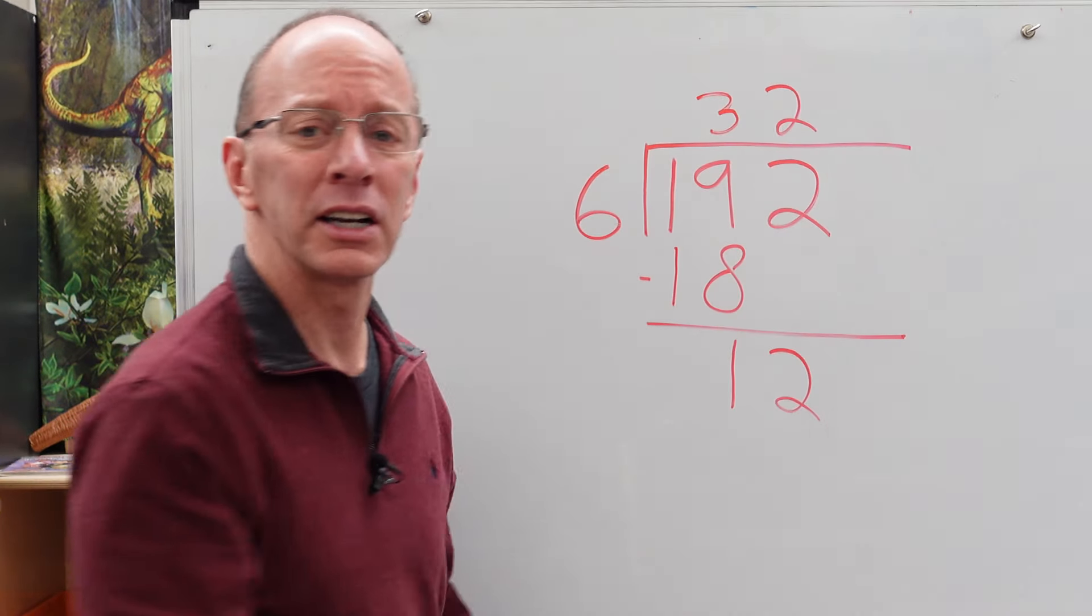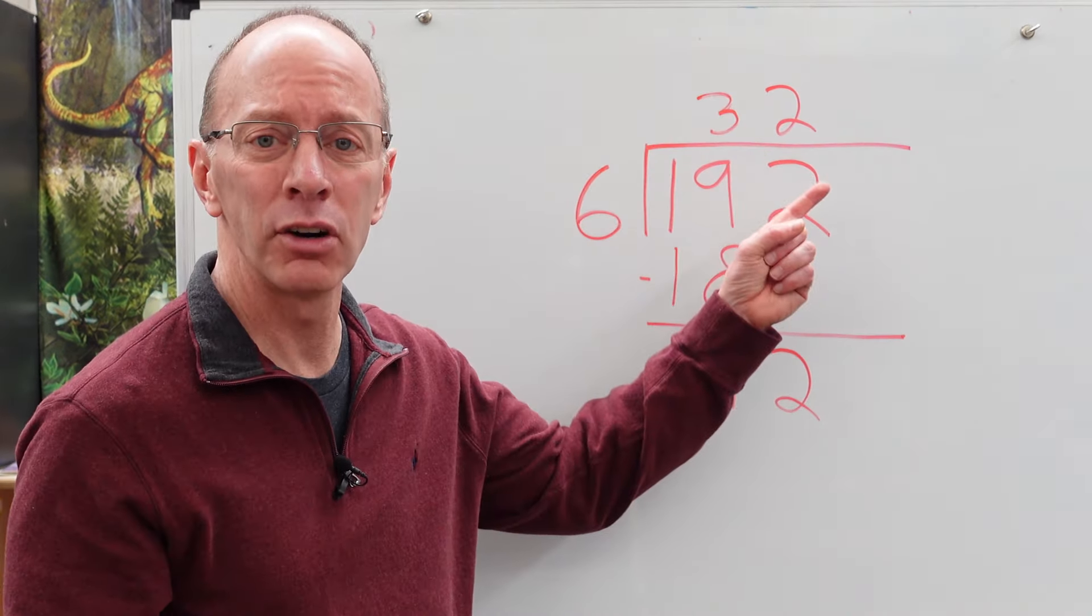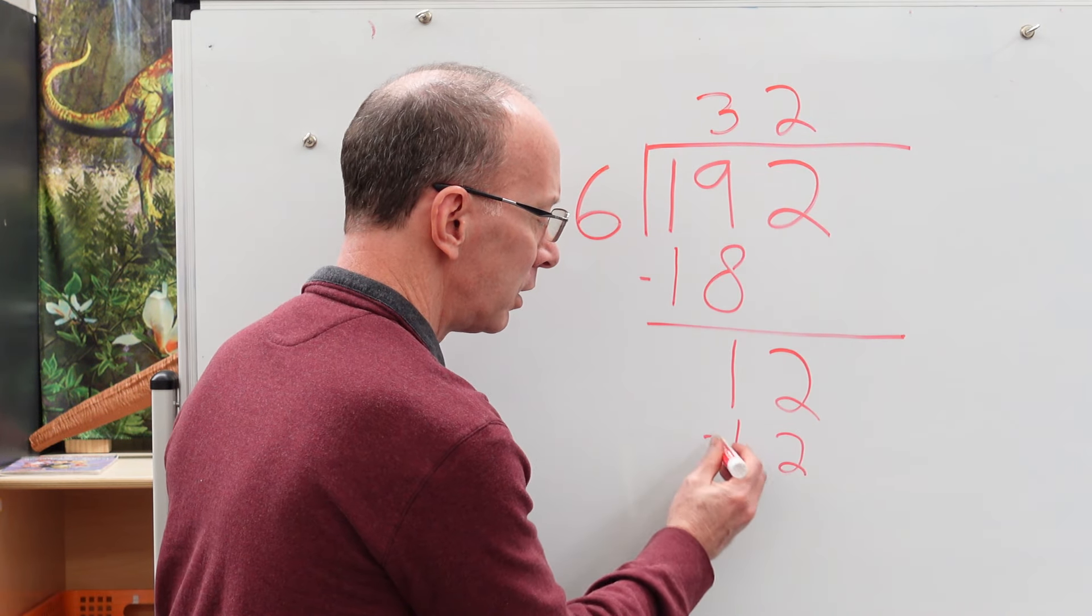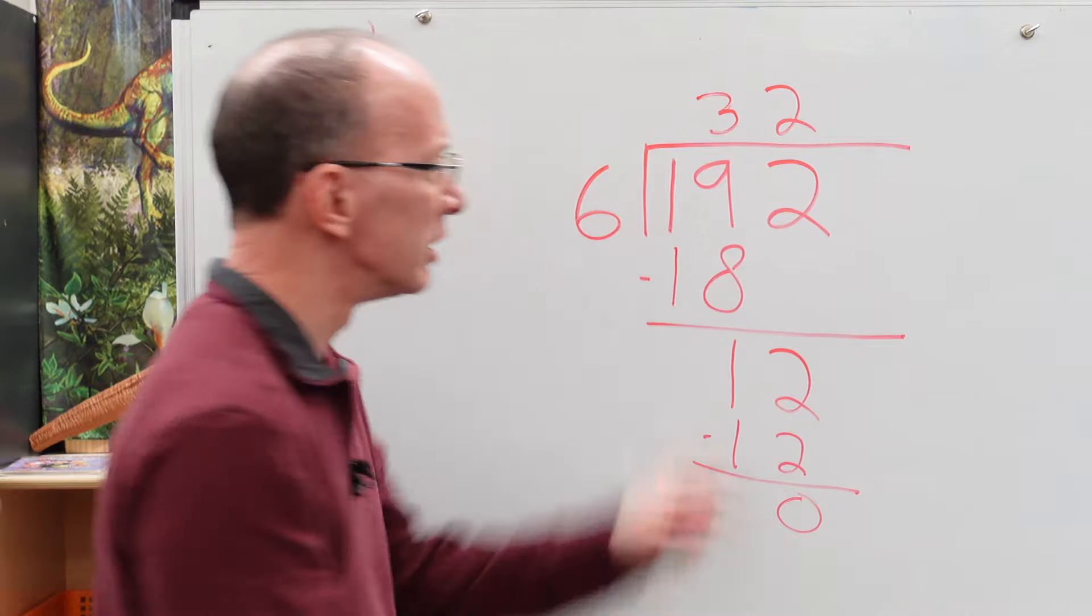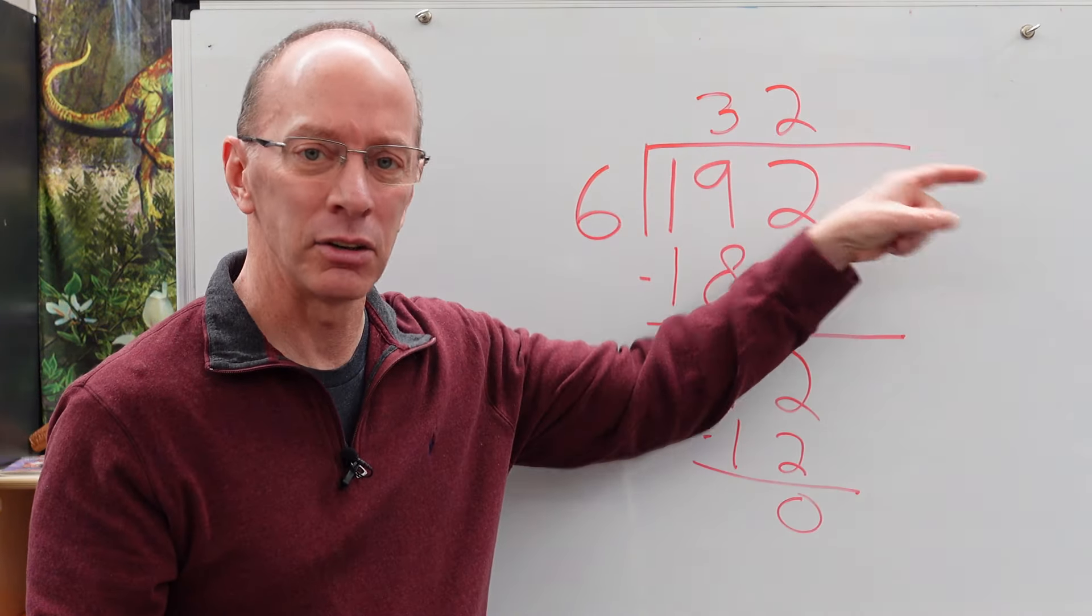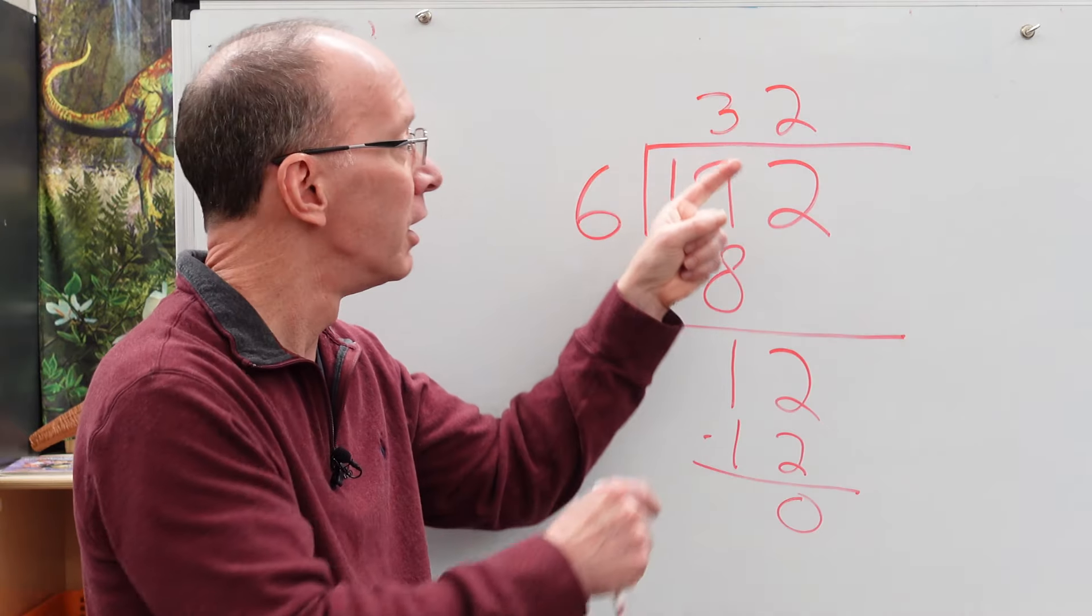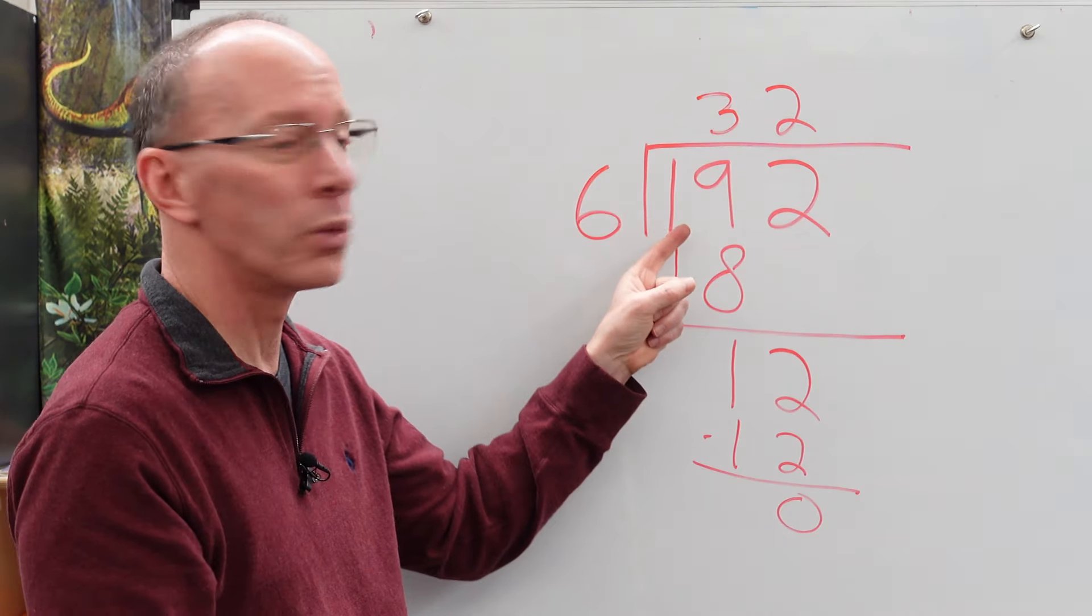Oh my goody gumdrop. We don't even have a remainder. Look at that. Two times six is 12 with a remainder of zero. Don't put r and then zero. If it's zero, you don't have to put a remainder. It's just 32. 32 times six equals 192. 192 divided by six is 32. You did it.